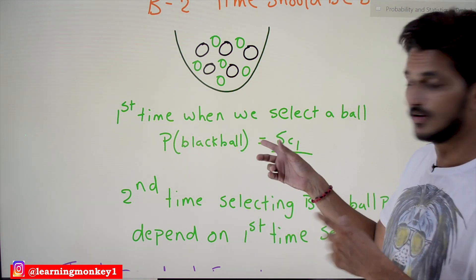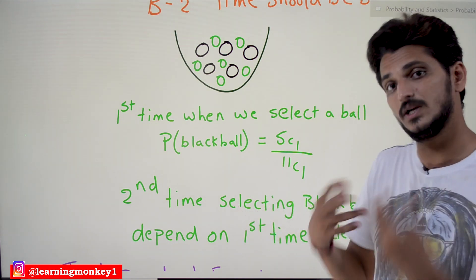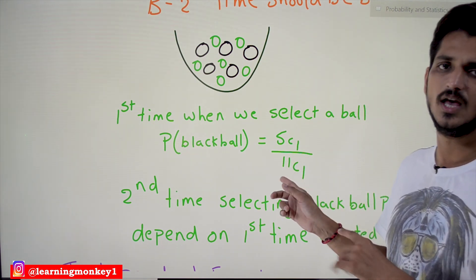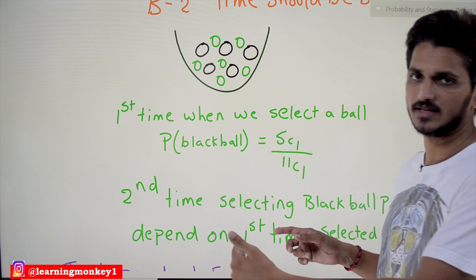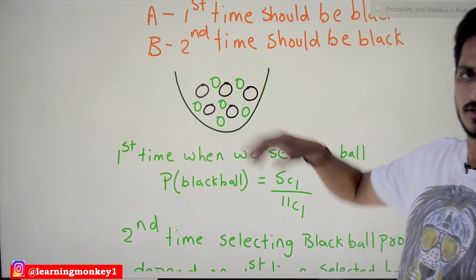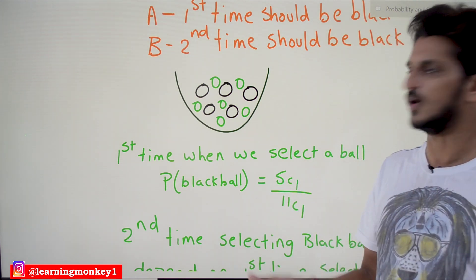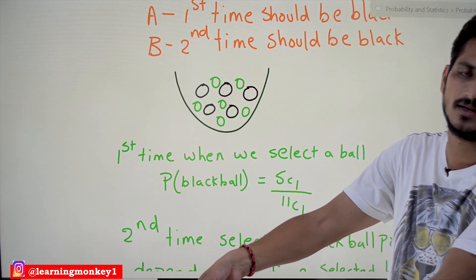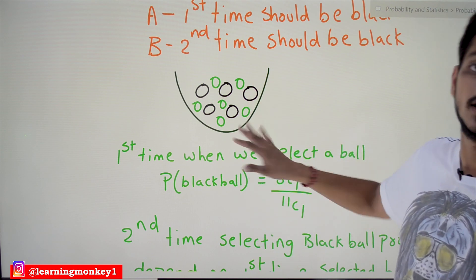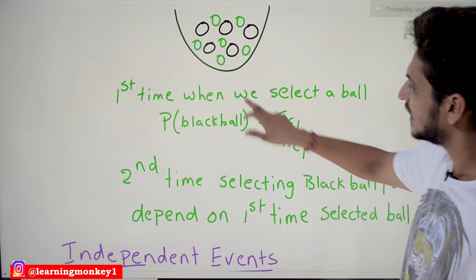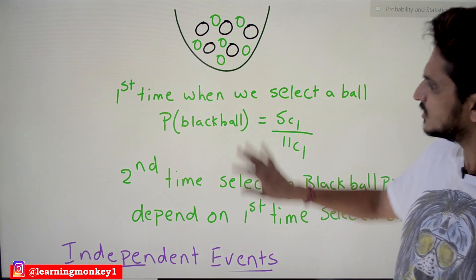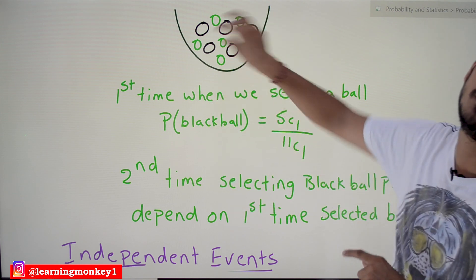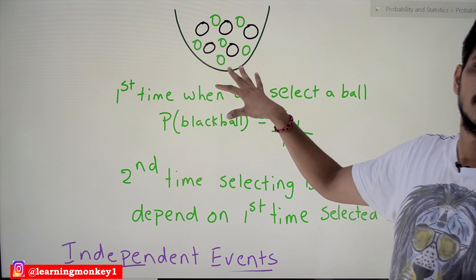How we find the probability for dependent events will be discussed in our next class when we cover conditional probability. Now, what we are doing here is: the first time you pick a ball, we are not going to replace the ball back in the bag. But if you replace the ball back in the bag, then these two events become independent events.